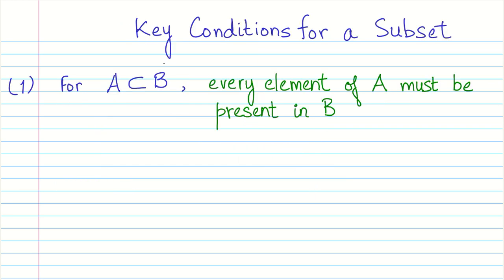Now what are the key conditions for a subset? For A to be a subset of B, every element of this set A, which is the subset, must be present in B. The key thing to remember is that every element of this subset must be found in the bigger set, that is the set B.